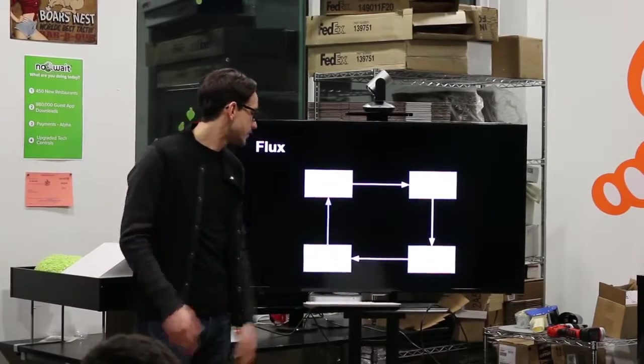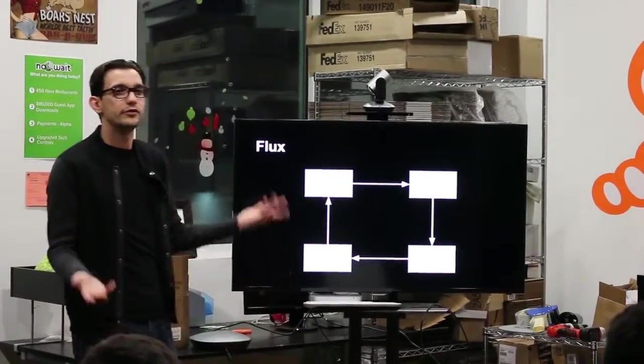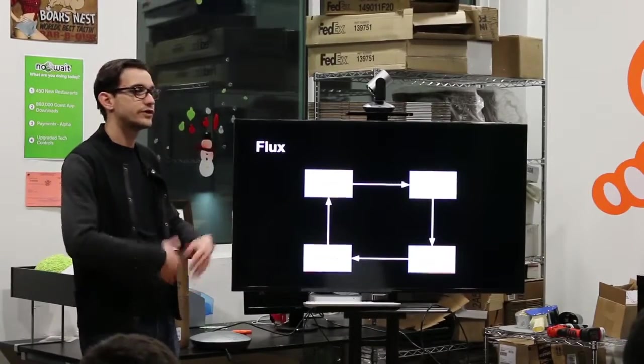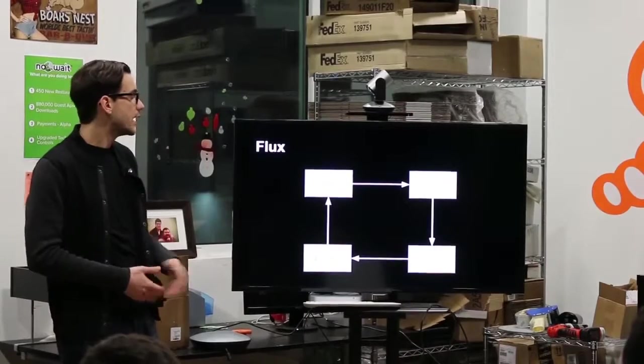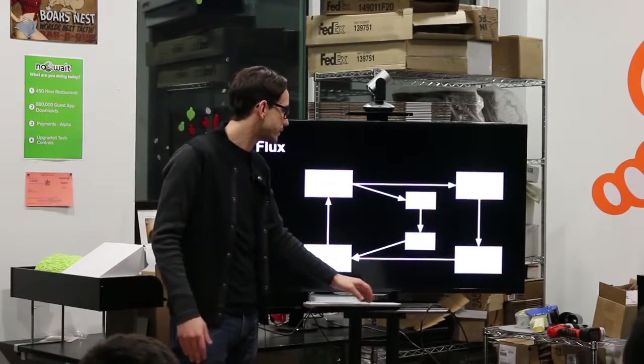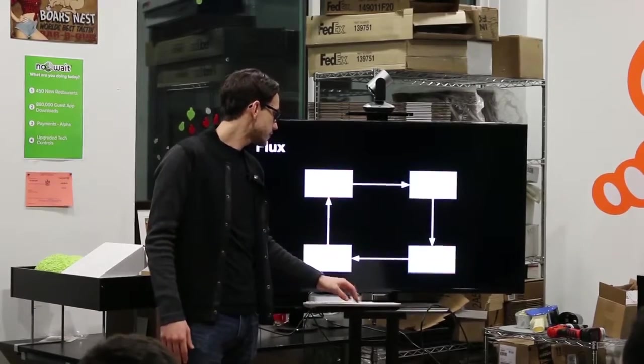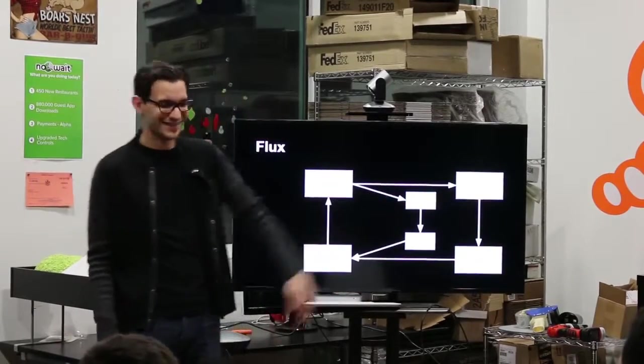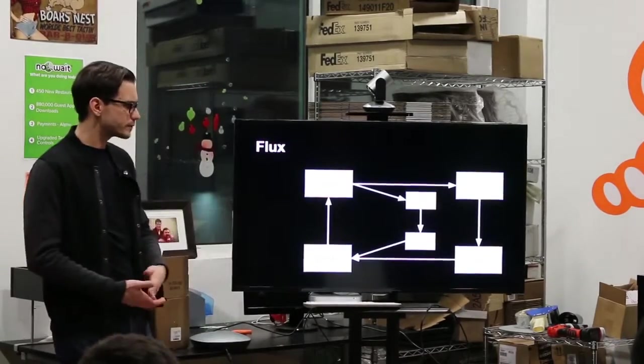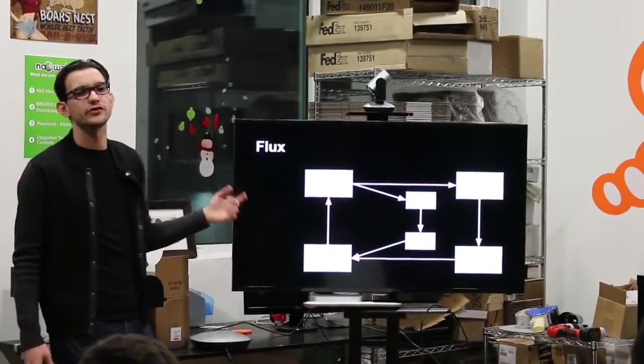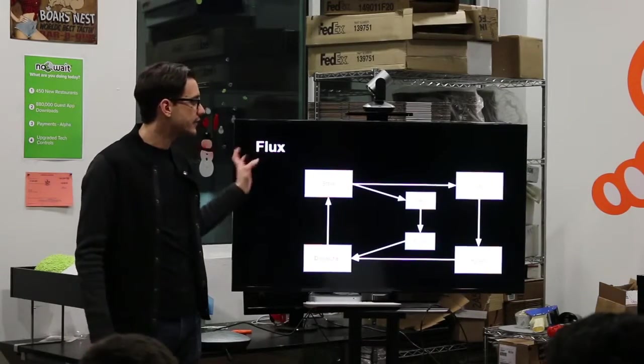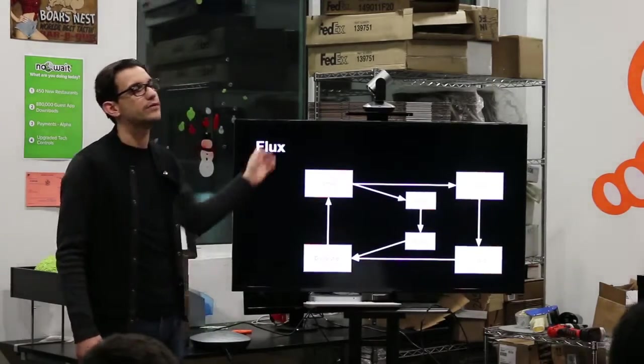The dispatcher tells the store, hey, user details got updated, update yourself. It changes the data and tells the view to update itself. If I add complexity in this example, you see that it still goes in a circle. I can add more stores, I can add as many things as I want, and it will still always be circles.